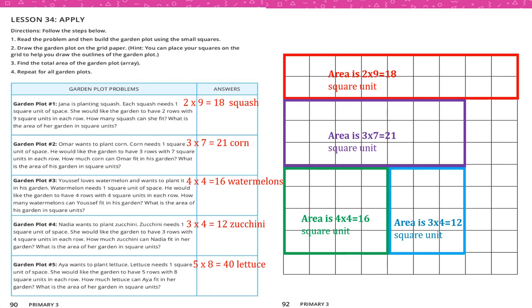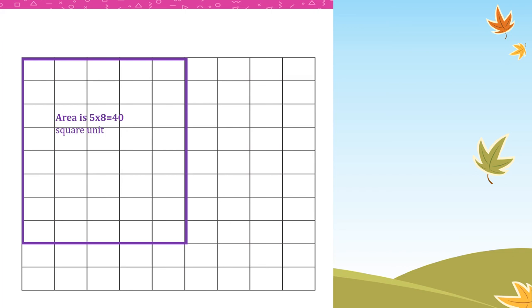Number 5: Aya wants to plant lettuce. Lettuce needs 1 square unit. She wants 5 rows with 8 square units in each row. So how many lettuce can Aya fit? 5 times 8 equals 40. We draw it on the next page — 5 rows with 8 squares each — total area is 40 square units.